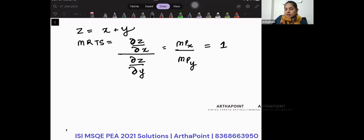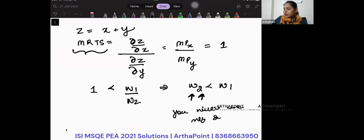Then what do we say? If MRTS is less than the wage ratio, the input price ratio, then W2 is less than W1. So if input 2 is more expensive, you will use only input 1.